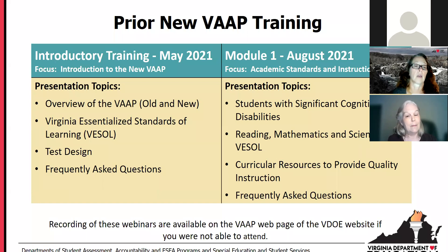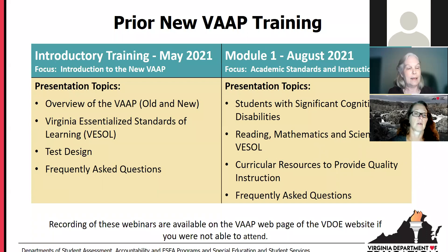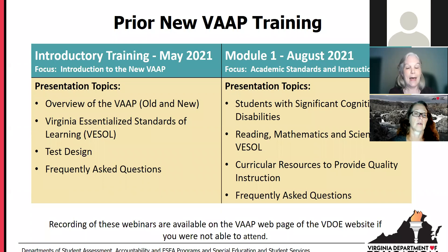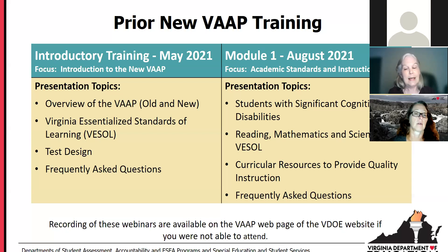Moving on, we had Module 1 in August of this year. The focus really was on the characteristics of students with significant cognitive disabilities, looking at the new VESOLs in reading, math, and science, and also quite a bit of discussion of the curricular resources that the TTACs in particular have provided to support the instruction of those VESOLs. Each recording of each of the webinars is available on the VAP page on the DOE website if you are not able to join us for those presentations.